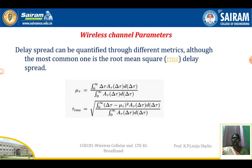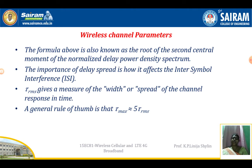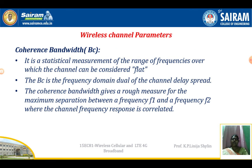Delay spread can be quantified through different metrics. Using root mean square delay, μ_τ is given by the formula τ_rms. The importance of delay spread is that it causes inter-symbol interference (ISI). τ_rms gives the measure of the width or spread of the channel response in time. A thumb rule is that τ_max is approximately equal to 5 times τ_rms.